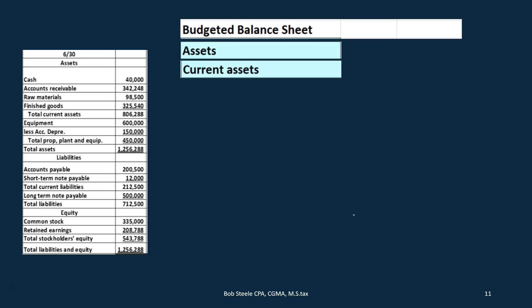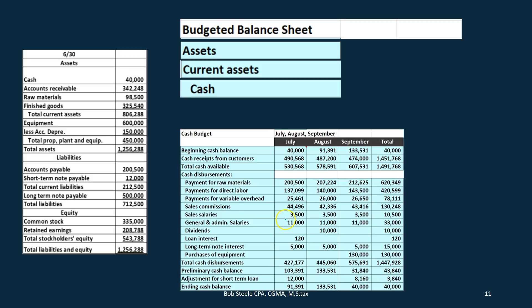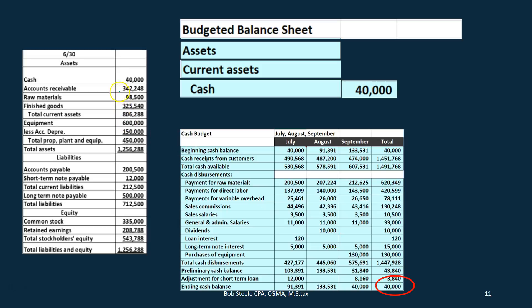The balance sheet is at the end of the budgeted time period — where do we stand after the quarter we are budgeting for has ended? We're going to start with current assets, beginning with cash. Cash will be coming from the cash budget — we have the $40,000. Don't confuse that with the $40,000 at the beginning of last time's balance sheet. This is the balance sheet at the end of last period, which is the beginning numbers for this period. The reason it's the same is because that's our minimum balance — we needed to take out a loan to get to $40,000.